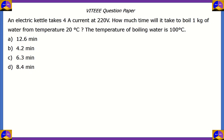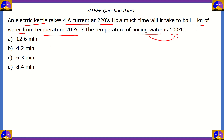Now let's look at the final question for the day. An electric kettle takes 4 amperes of current at 220 volts. How much time will it take to boil 1 kilogram of water from a temperature of 20 degrees Celsius? The temperature of boiling water is 100 degrees Celsius. Is it 12.6 minutes, 4.2 minutes, 6.3 minutes, or 8.4 minutes?